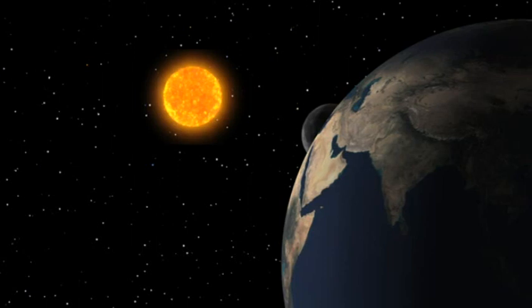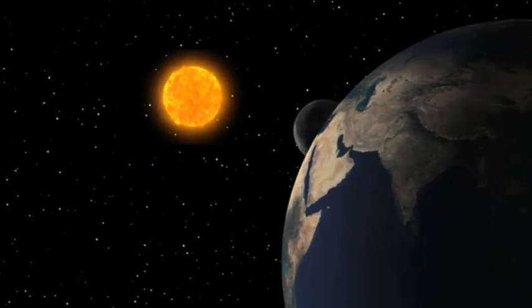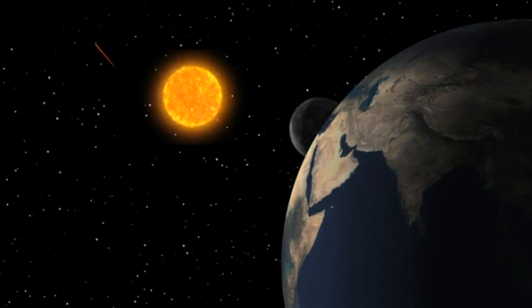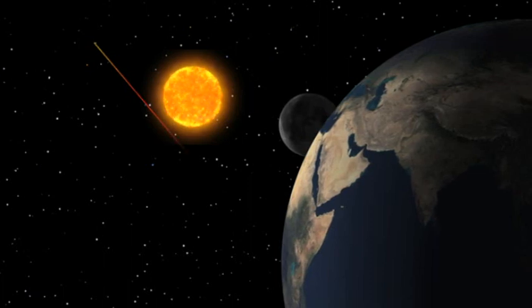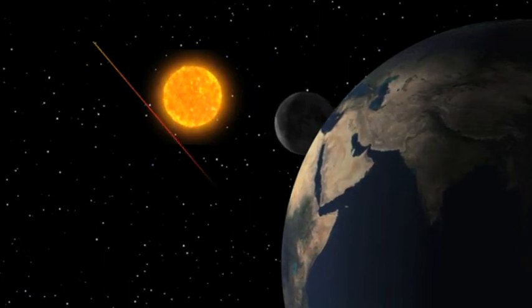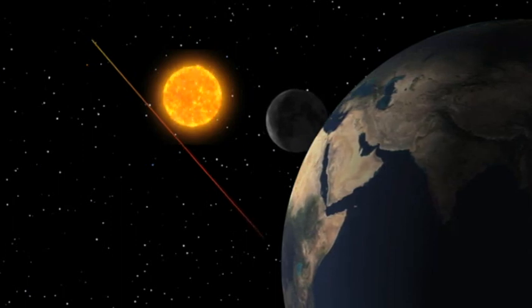Imagine the light from a distant star traveling past the Sun. According to Isaac Newton, gravity is an attraction between all objects with mass. And since light has no mass, the star's light would be unaffected by the Sun's gravity.